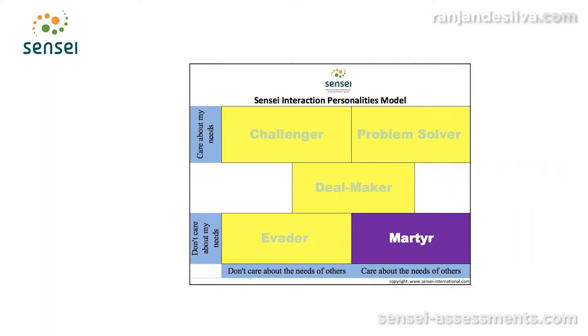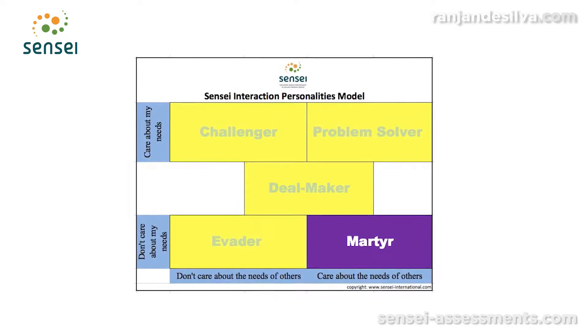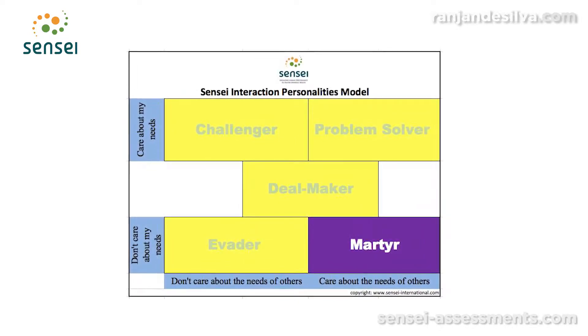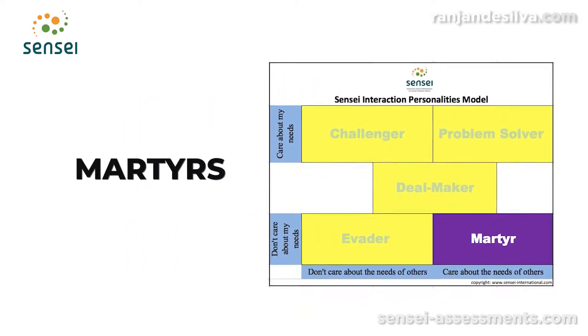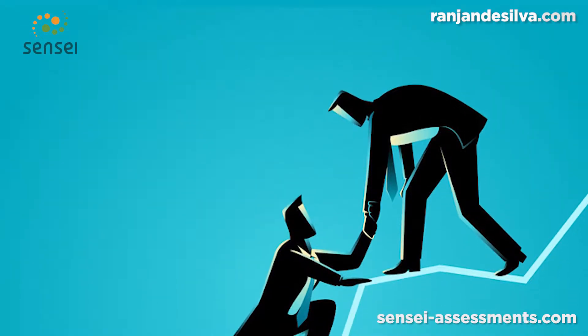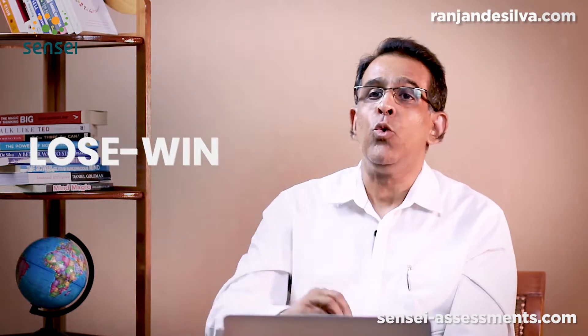The other extreme of the challenger is where mutuality is high — you actually care about other people's needs — but assertiveness is low, where you don't care about your own needs. These people are called the martyrs. Martyrs are people who like to sacrifice, give in, and let go of their position. You want to keep the other person happy, ensure peace and togetherness in the team. You allow yourself to take a back seat and just go with the other person's viewpoints and decisions. The martyr personality is a lose-win situation: I lose, you win, and that's okay.